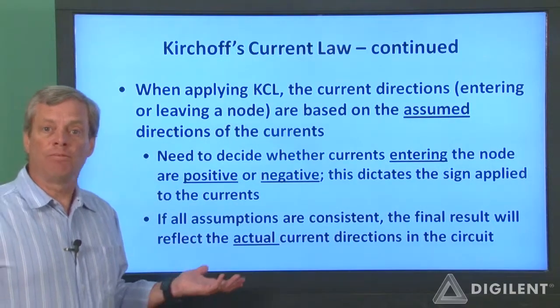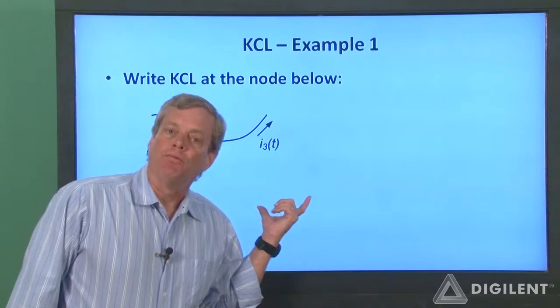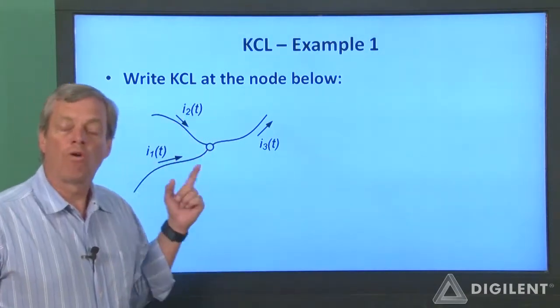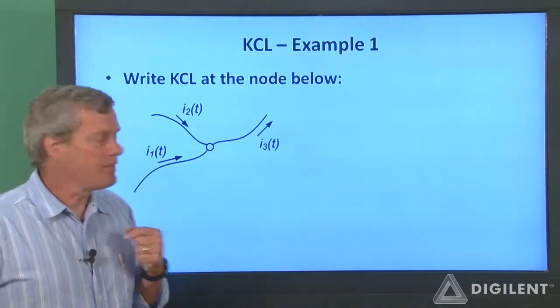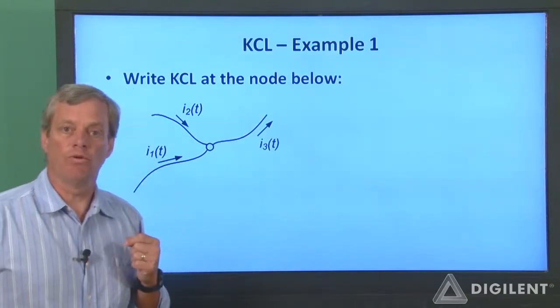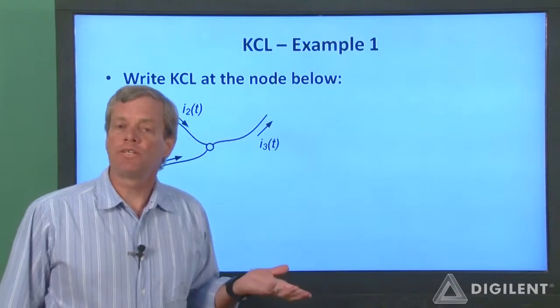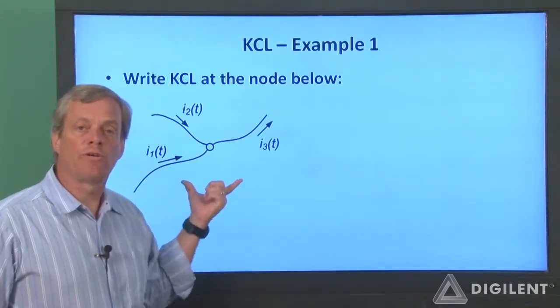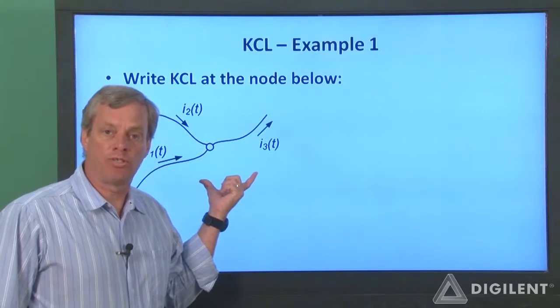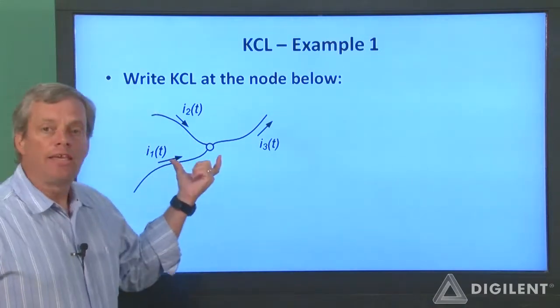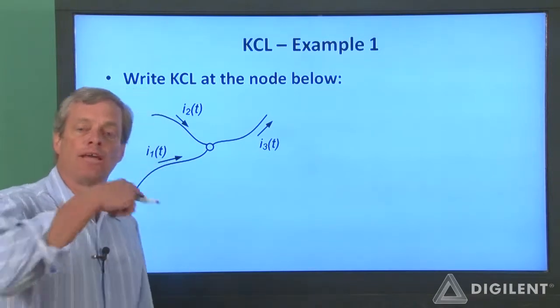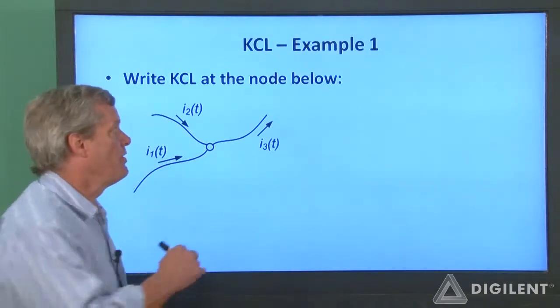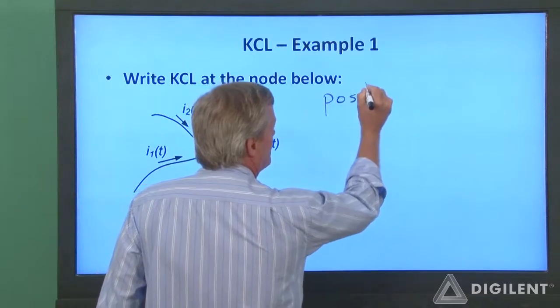Now, let's do a couple of examples to show what we're talking about. Here's our first example. We have a node here with three currents. Our reference current directions are such that I1 and I2 are entering the node and I3 is leaving the node. These reference directions don't necessarily have anything to do with the actual current directions. They're just going to define how we choose our signs. I can do either of two things. I can assume that positive currents enter the node or I can assume that positive currents leave the node. Let's first do it with positive currents entering.